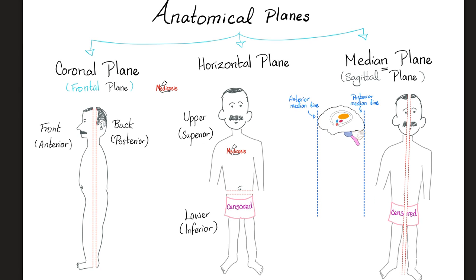The coronal plane or the frontal plane divides me into anterior part and posterior part. Anterior means front, posterior means back. Horizontal plane divides me into upper and lower. Upper is called superior. Lower is called inferior in anatomical terms. Median or sagittal, you cut me like this in the midline vertically. And now I am right half and left half.